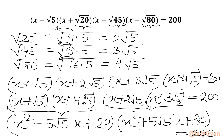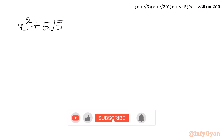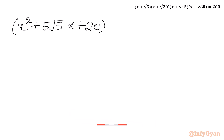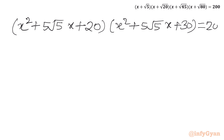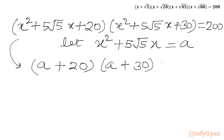Now we can see that both products contain x² + 5√5·x. We can replace this with another variable. Let x² + 5√5·x = a. So we get our equation in a: (a + 20)(a + 30) = 200.